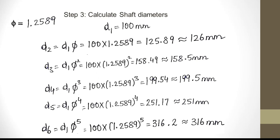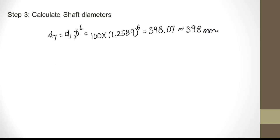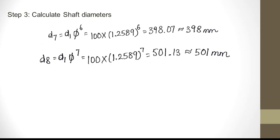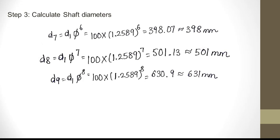D6 is D1 × phi raised to 5: 100 × 1.2589 raised to 5 turns out to be 316.23, which we round off to 316 mm. D7 is D1 × phi raised to 6, and D8 is D1 × phi raised to 7: 100 × 1.2589 raised to 7 turns out to approximately 501 mm.